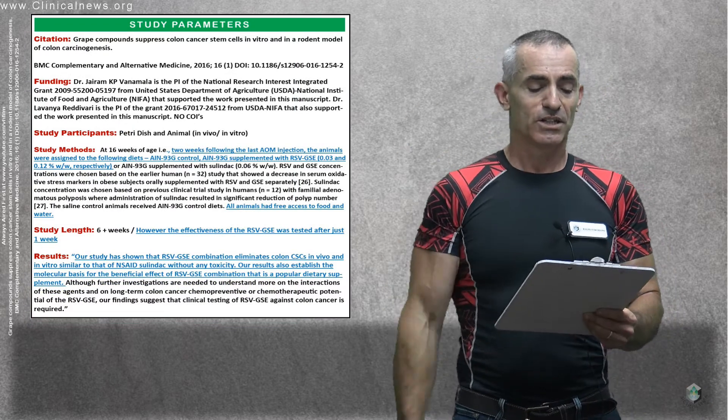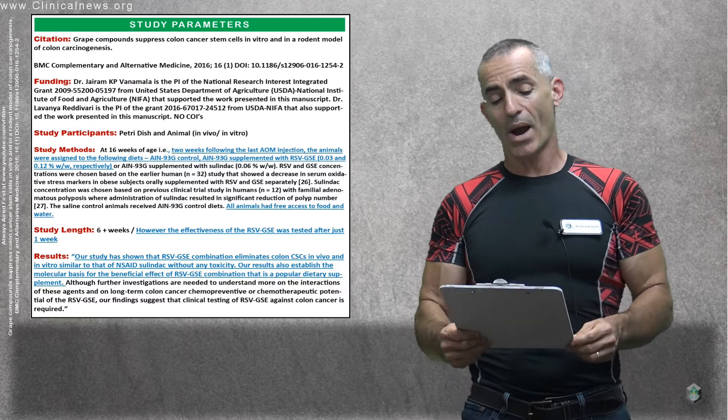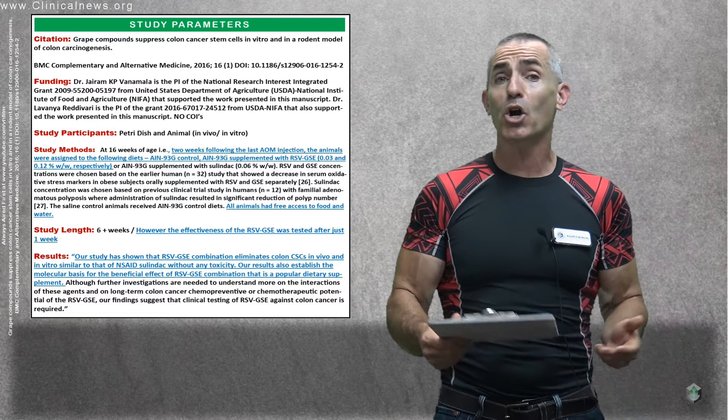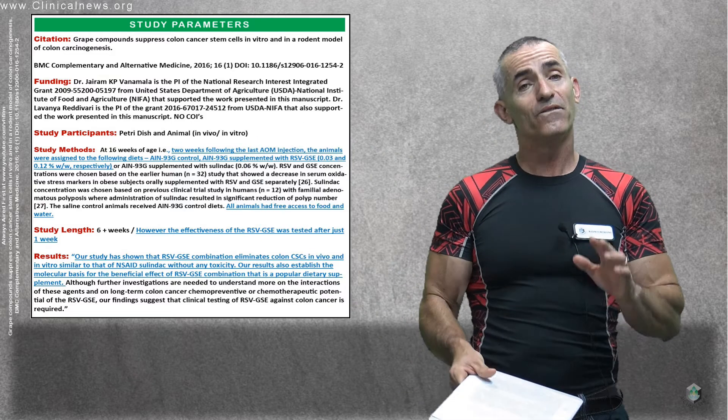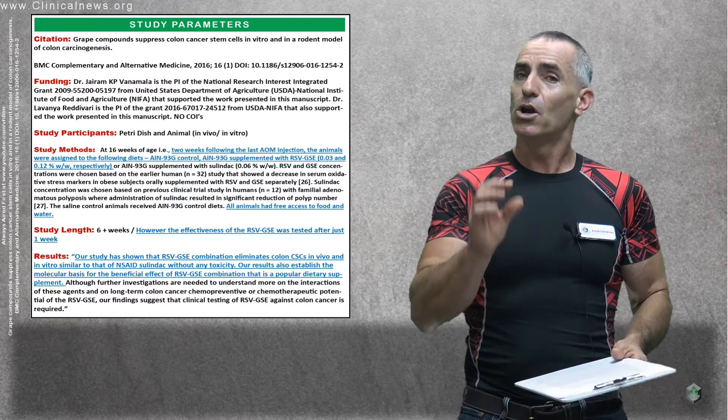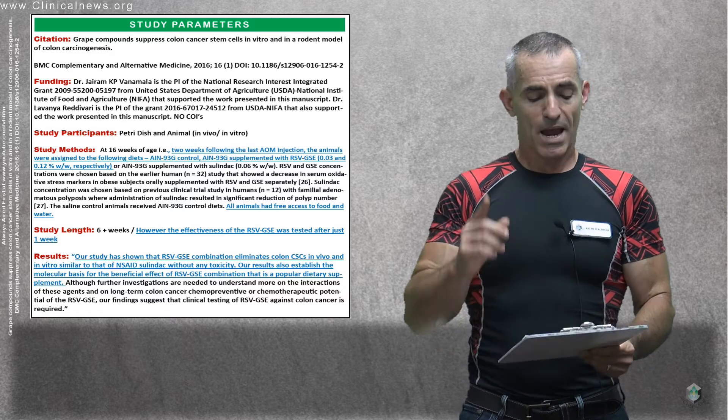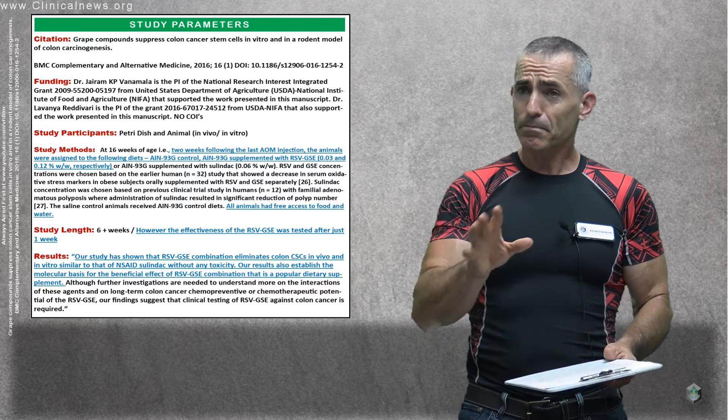Title as follows: grape compounds suppress colon cancer stem cells in vitro and in a rodent model of colon carcinogenesis. Published in, well, you see there the DOI, funding pretty standard, no conflicts of interest reported.